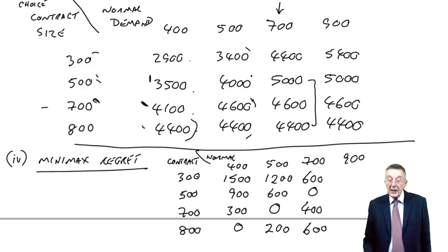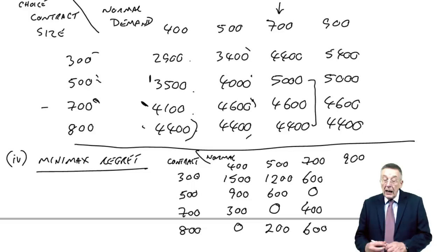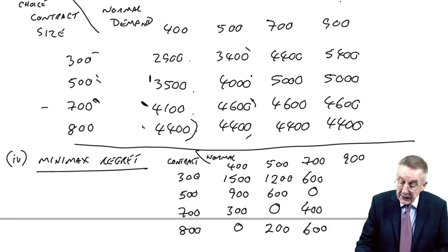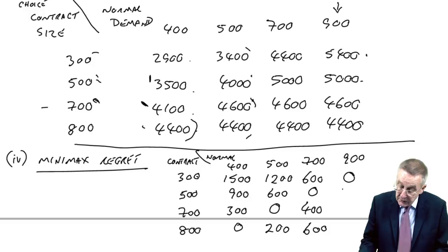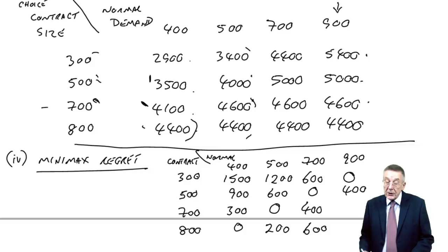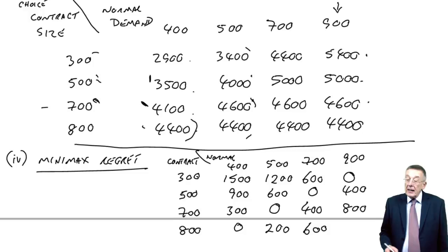And finally, the only remaining level of uncertainty is 900. So, 900, what's the best? The highest is 5,400, which would have been contracting for 300, no regret. Had we gone for 500 units, we'd only get 5,000, we've lost the difference of 400. If we'd gone for 700, we'd only get 4,600, we'd lost the difference of 800. And finally, if we've gone for 800, we'd only get 4,400, we'd lost the difference of 1,000.